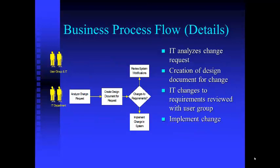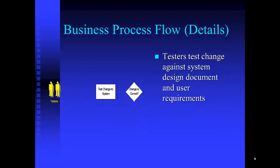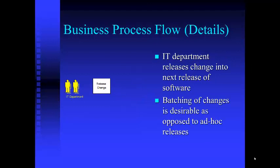After the user group and IT group look at it, assuming it's accepted, it gets passed to IT. IT analyzes the change request and creates a design document. Changes to the requirements are reviewed with the user group, and IT implements the change. Testers then test the change against the system design document and user requirements. If the change is correct, it's sent to the IT department who releases the change into the next software release.